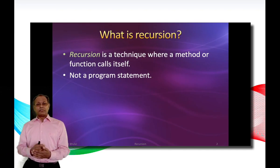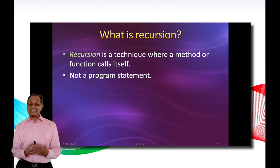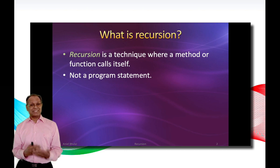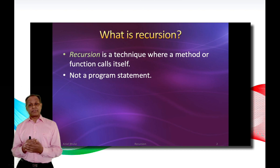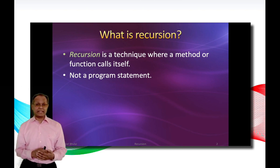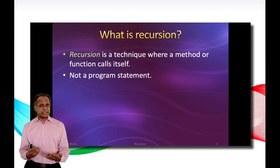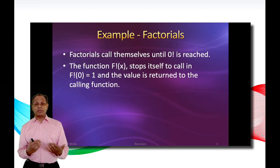So what is recursion? Formally said, recursion in computer science is a method where the solution to a problem depends on solutions to smaller instances of the same problem. The approach can be applied to many types of problems, and recursion is one of the central ideas of computer science. Simply said, recursion is a programming technique where a method or a function calls itself within the program. Note that recursion is not a program state — it is just a technique.